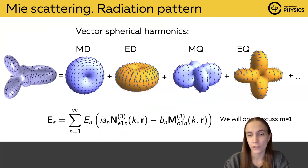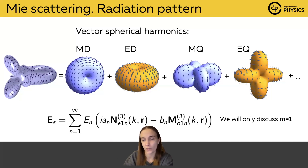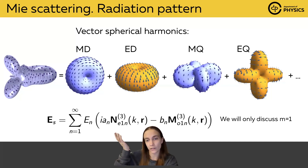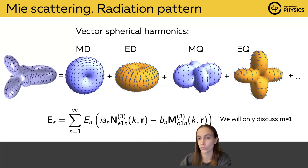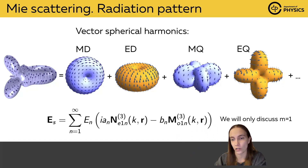Mie theory tells us that any possible radiation pattern by any possible sphere can be decomposed into a sum of vector spherical harmonics. Here you can see the formula for the scattered electric field obtained from Mie theory, which can also be found in Warren Huffman's book linked in the description. The scattered electric field is decomposed into an infinite sum of multipoles or vector spherical harmonics. The N functions are electric multipoles, colored in yellow, and the M functions are magnetic multipoles, colored in blue.